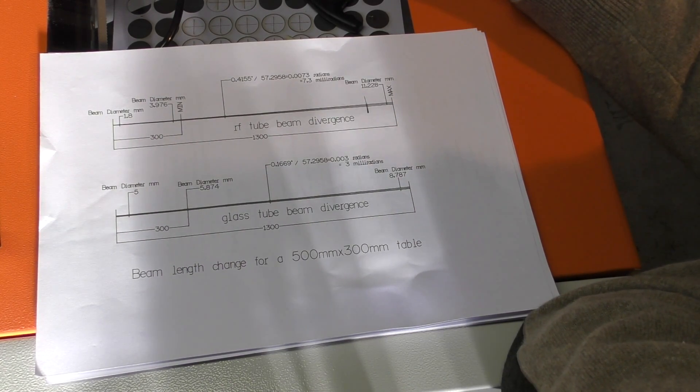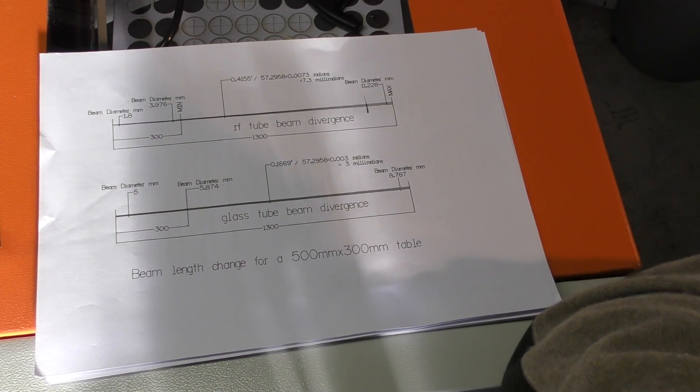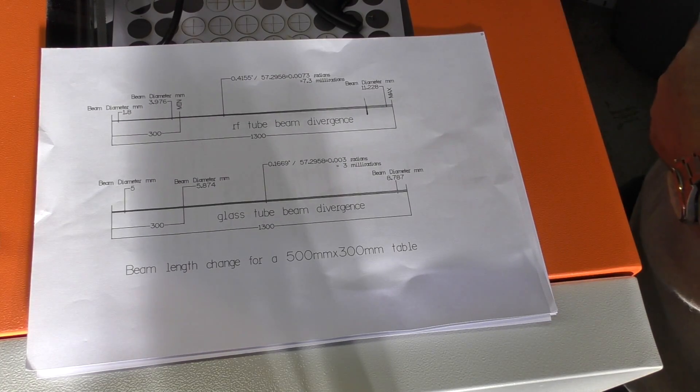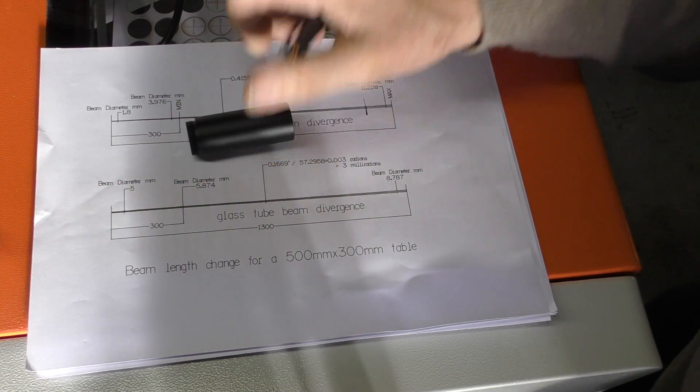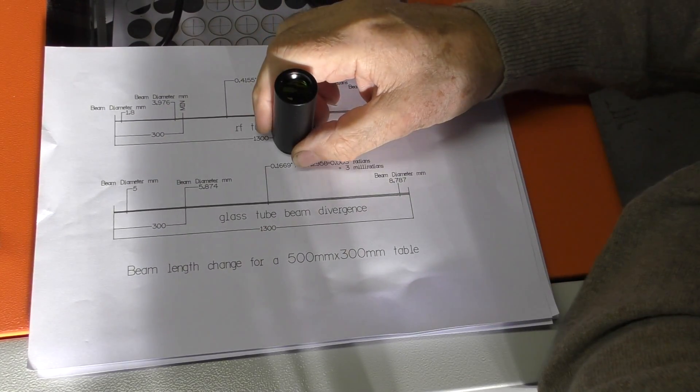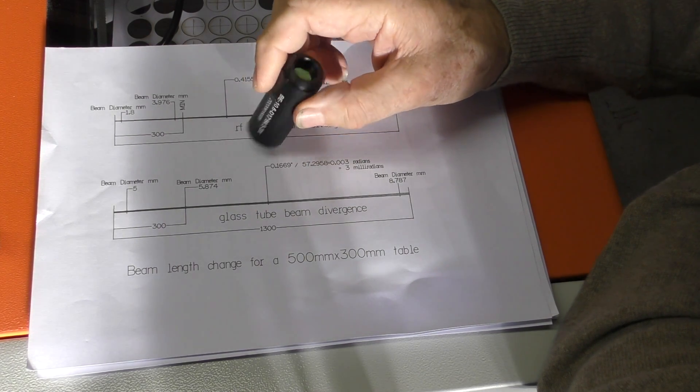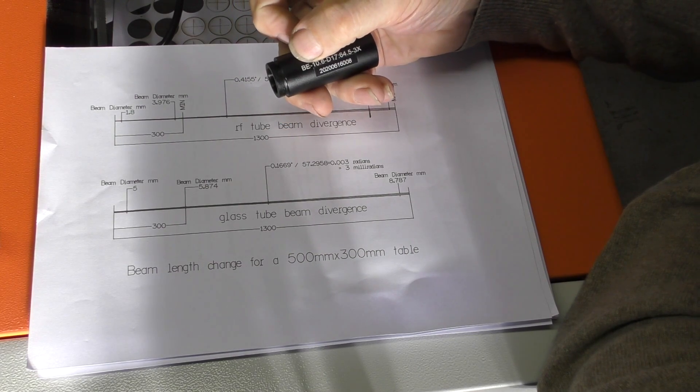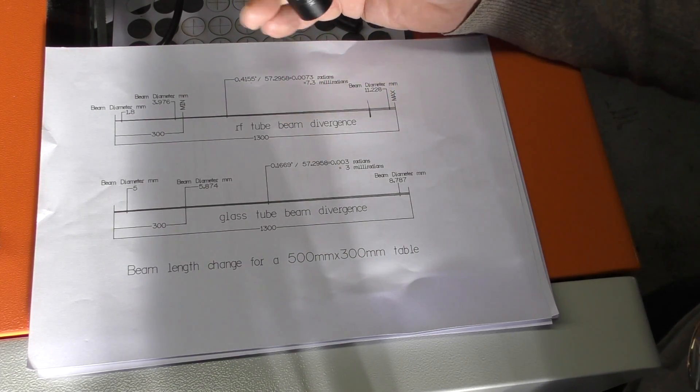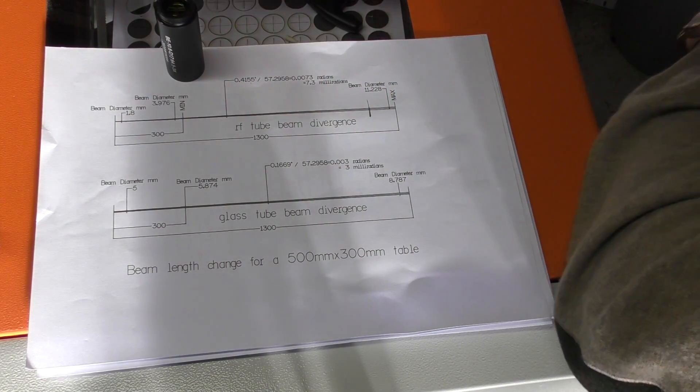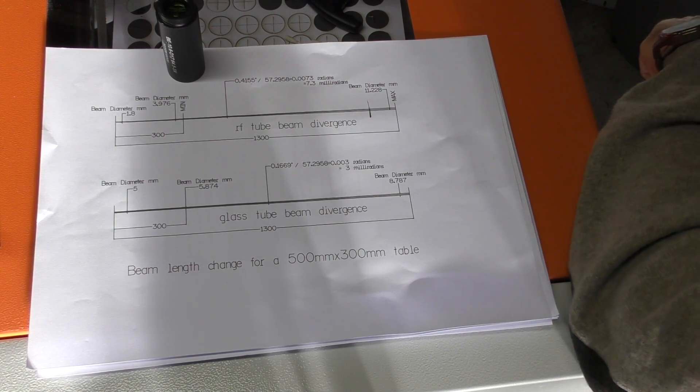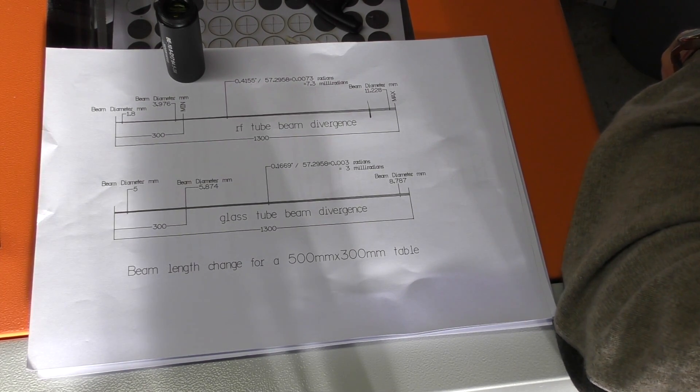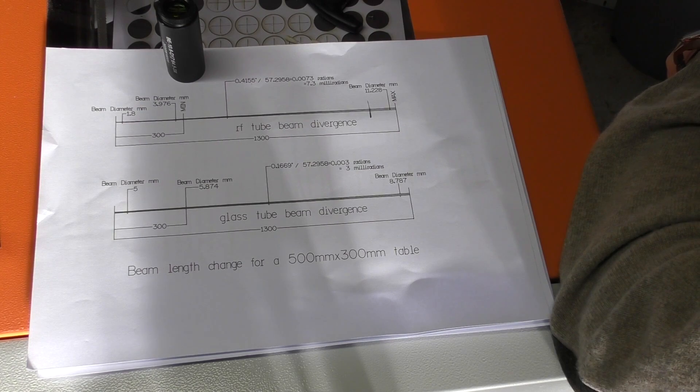So what can we do about it? As I mentioned in the last session, Cloudray sent me something along with this laser tube. They sent this thing. What is this thing? Well, it's got a lens in that end, it's got a lens in that end, and it's called BE, for beam expander.